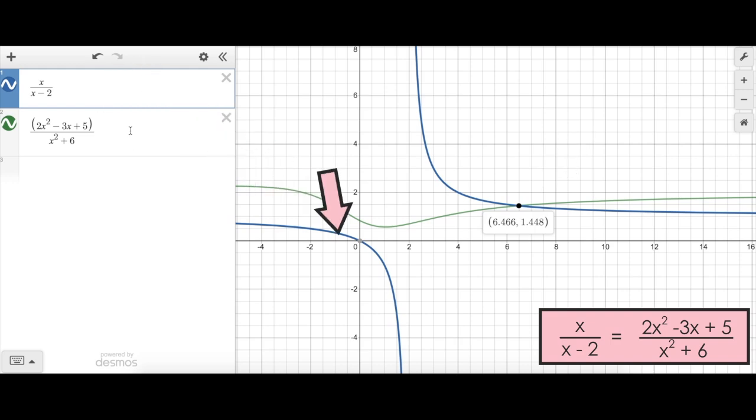So what this point represents here is when these two functions are equal. If I'm being asked to solve this rational equation problem, that's really what I'm trying to do is find out what x value makes these two equal. Well as it turns out 6.466 when subbed into each of these functions will produce a y value of 1.448. So 6.466 would be the solution to this rational equation problem.